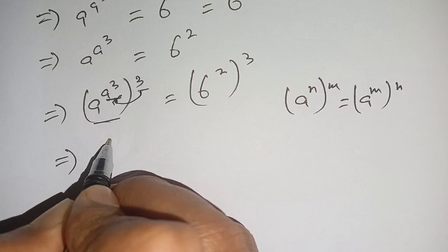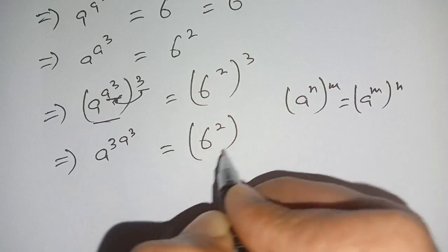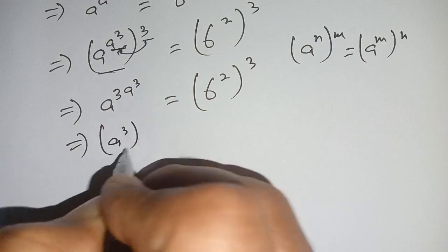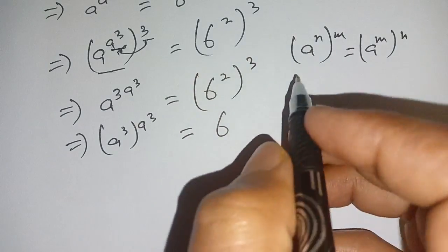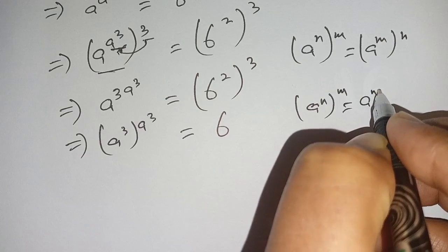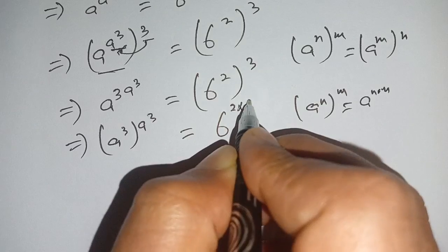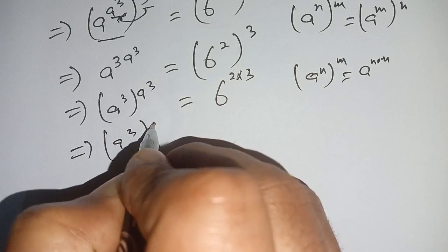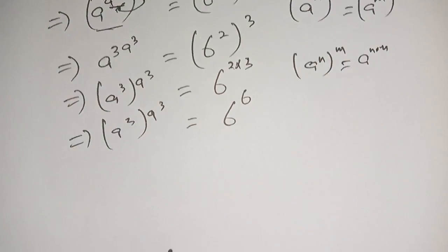Now we can write this as a power 3 times a power 3 is equal to 6 power 2 times 3. Applying the power rule, a power n times m can be written as a power n times m. So we have a power 3 power a power 3 is equal to 6 power 2 times 3, which becomes 6 power 6. Now you see that a power 3 is equal to 6.